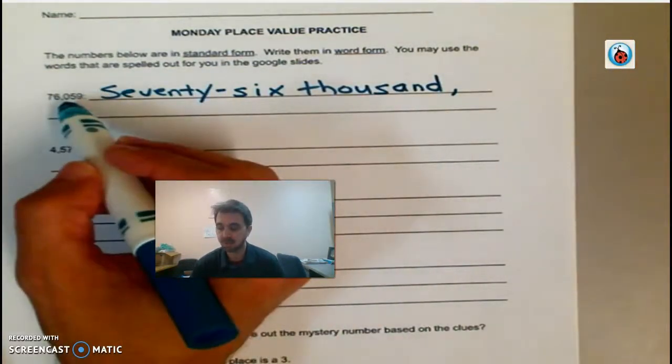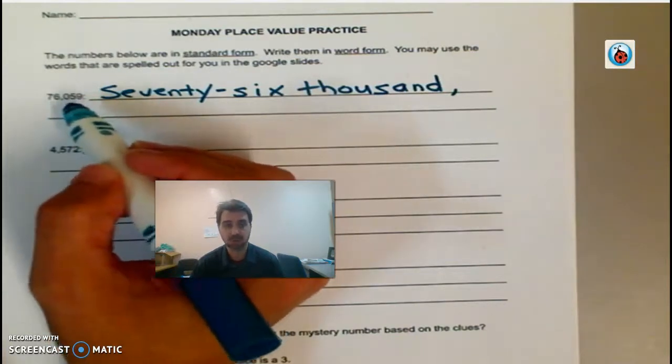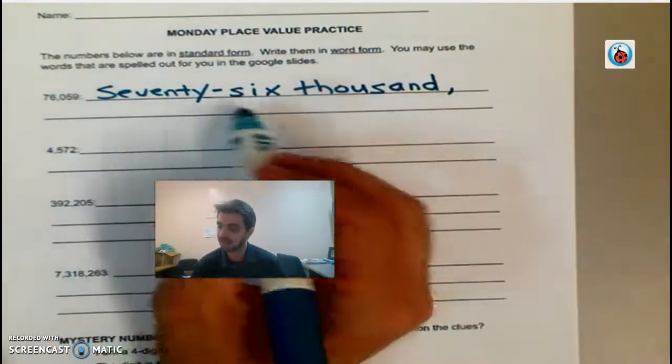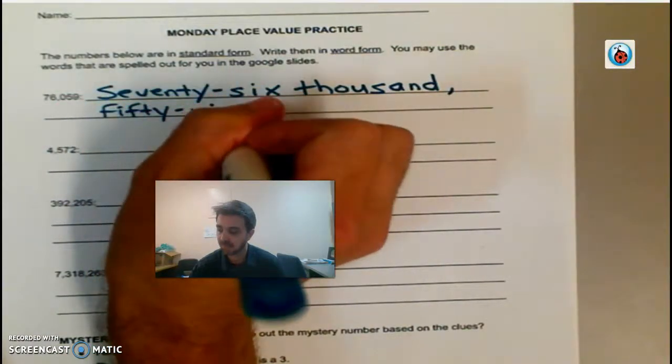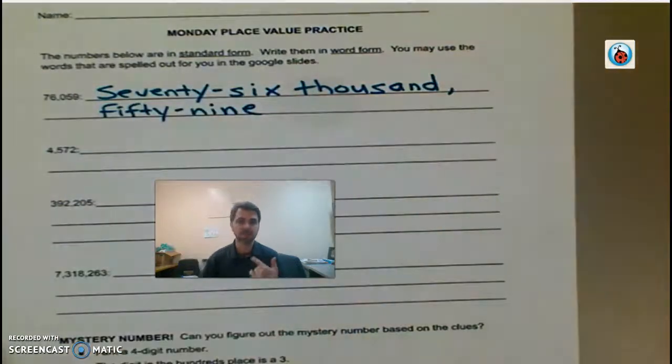Now you'll notice there's no digit in the hundreds place. So there's no hundreds to write. It's just 59. So 76,059. Okay, and there's another hyphen. So pretty much any time you write the words 20, 30, 40, 50, 60, 70, 80, 90, there's a hyphen that comes after it.